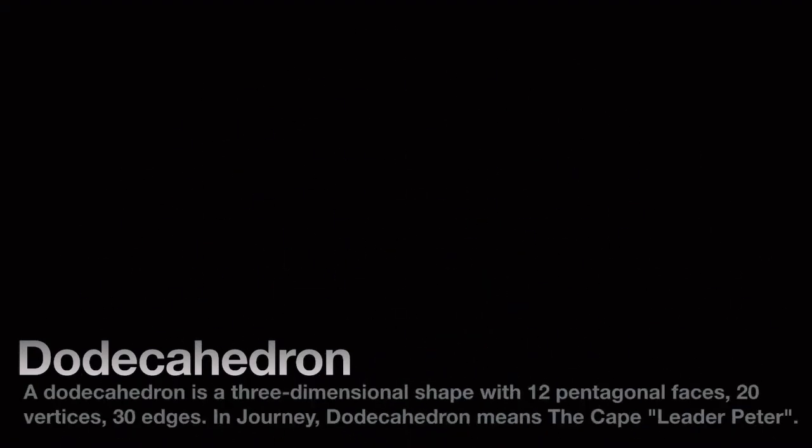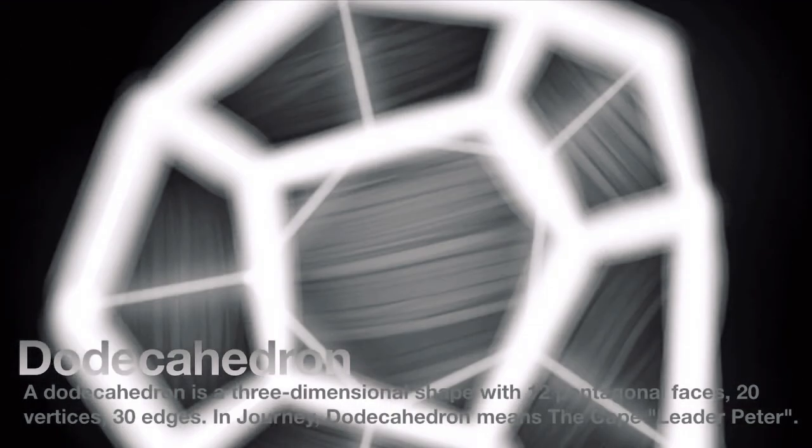A dodecahedron is a three-dimensional shape with twelve pentagonal faces, twenty vertices, and thirty edges. In Journey, dodecahedron means The Cape.